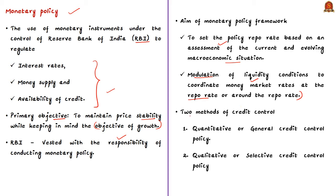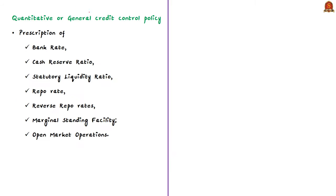Now we will see two methods of credit control by the Reserve Bank of India. These are quantitative or general credit control policy and qualitative or selective credit control policy. The instruments available under quantitative or general credit control policy are bank rate, cash reserve ratio, statutory liquidity ratio, repo and reverse repo rates, then marginal standing facility, and conduct of open market operations.